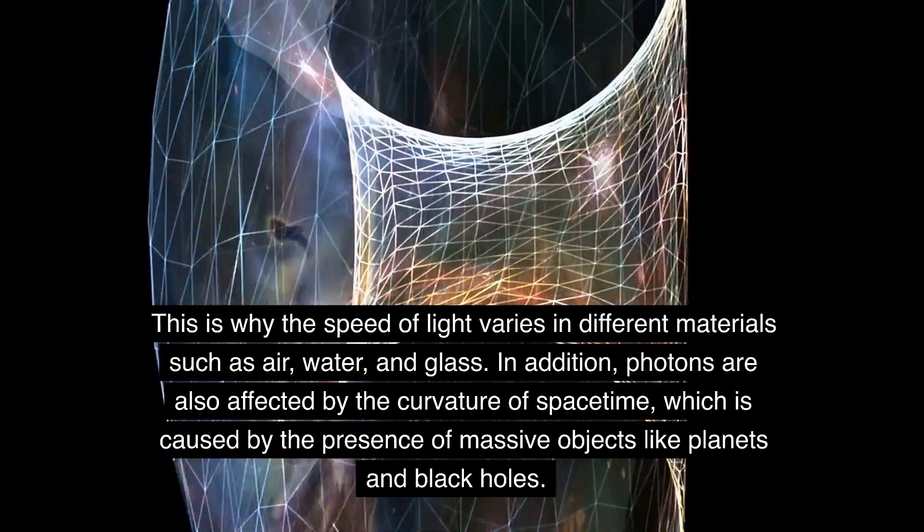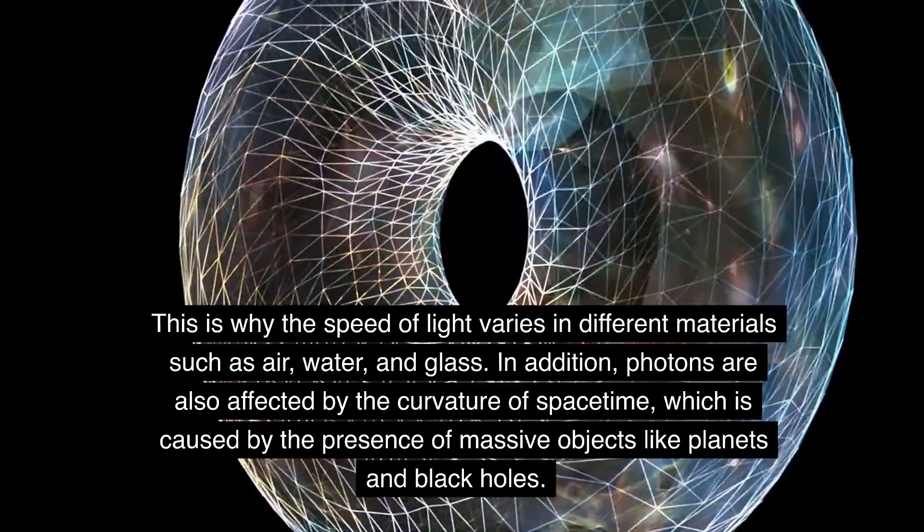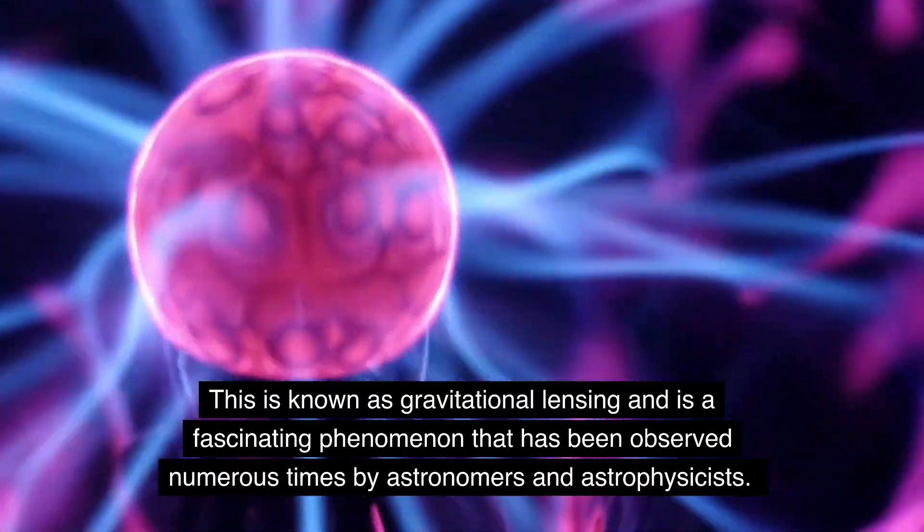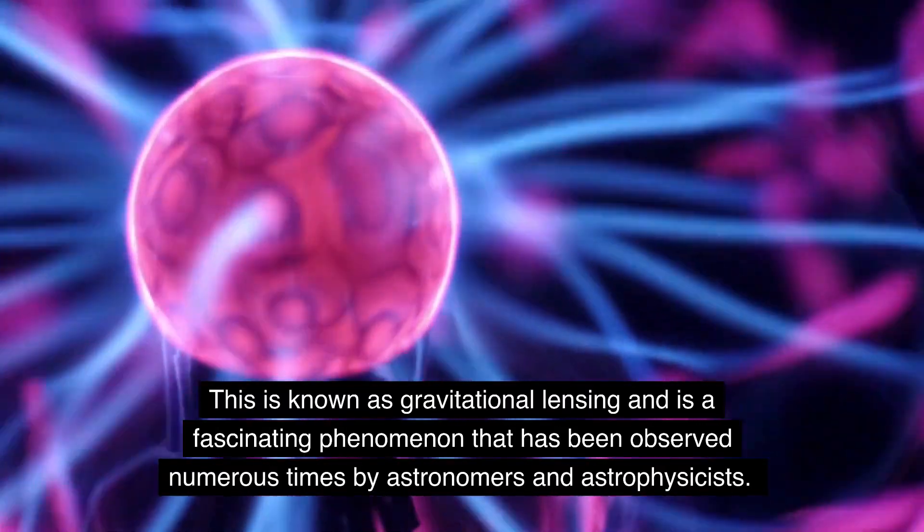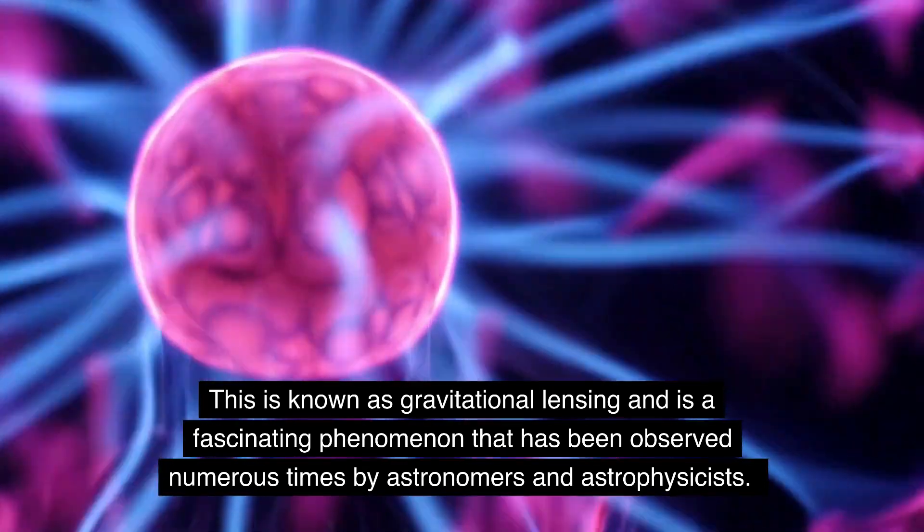In addition, photons are also affected by the curvature of spacetime, which is caused by the presence of massive objects like planets and black holes. This is known as gravitational lensing and is a fascinating phenomenon that has been observed numerous times by astronomers and astrophysicists.